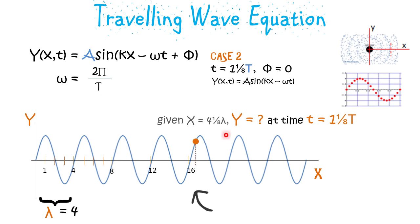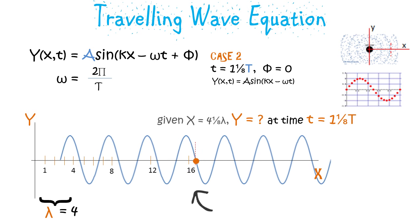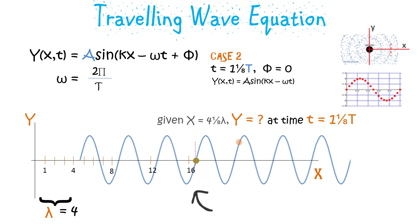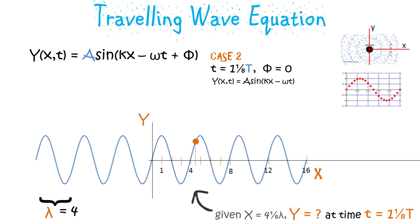We have to find the value of y at x equal to 4 and 1/8 lambda after time t equal to 9/8 of a time period. We find that the value of y would be zero after 9/8 of a time period. Another way to look at it is to fix our reference axis at kx equal to 4 and 1/8 lambda and then shift the reference axis by 9/8 of a time period, so that as the reference axis moves backward it appears that the wave is moving forward.